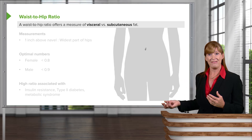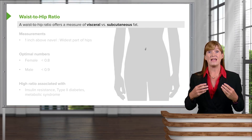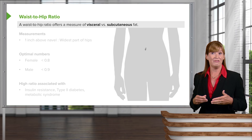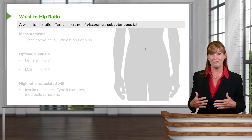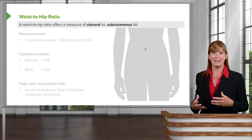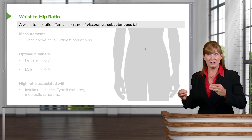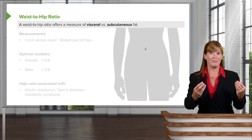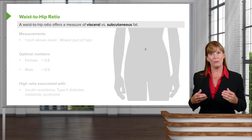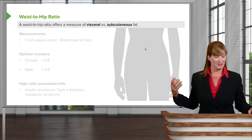Subcutaneous fat is the fat under our skin — we can feel it, pinch it, and use a caliper test to assess it. However, you cannot measure visceral fat because it's inside the peritoneal cavity. It's natural to have a certain amount of that fat to protect and pad the organs and create a safe environment for them. However, when we have an excess of that fat, it's associated with certain maladies.